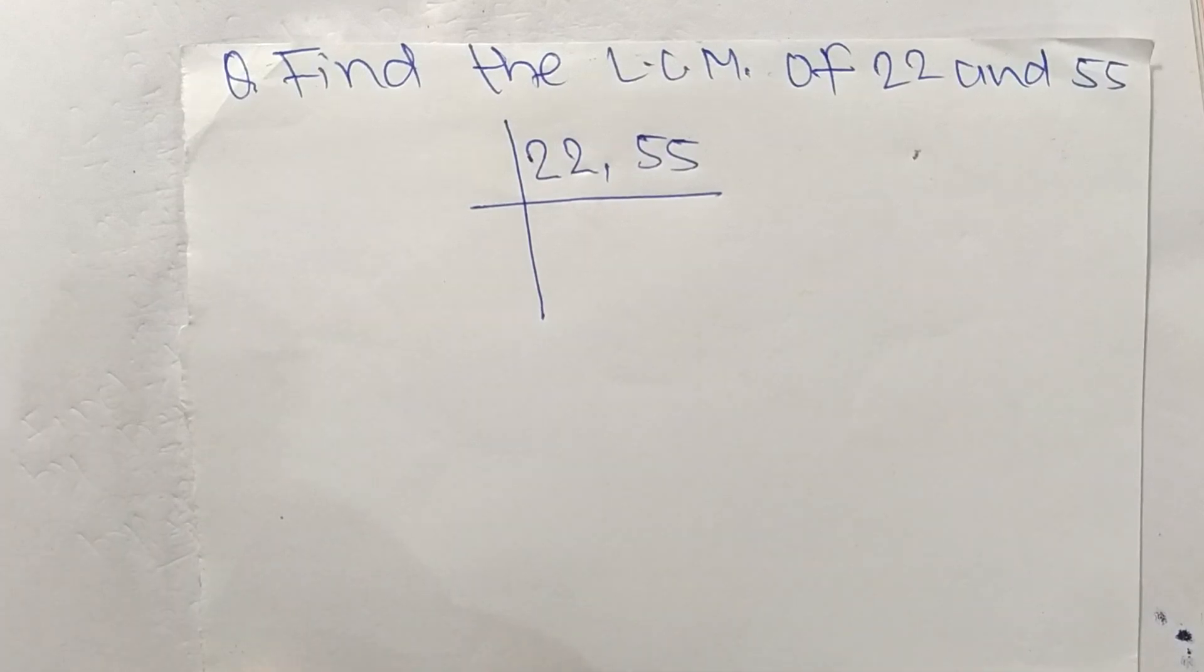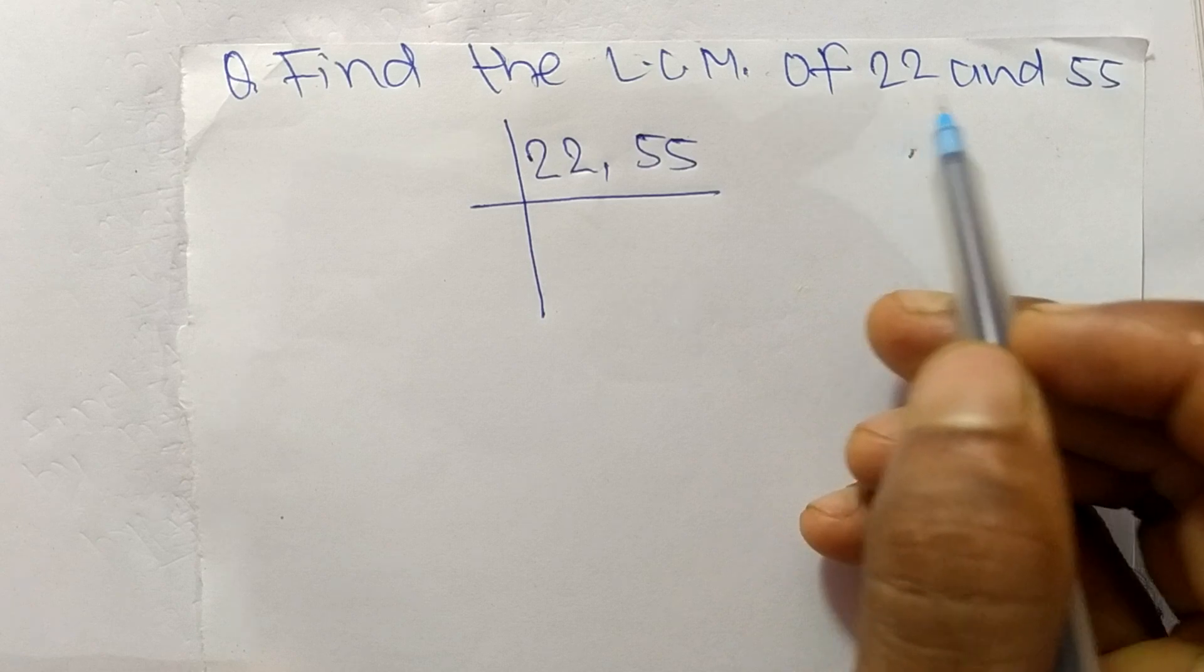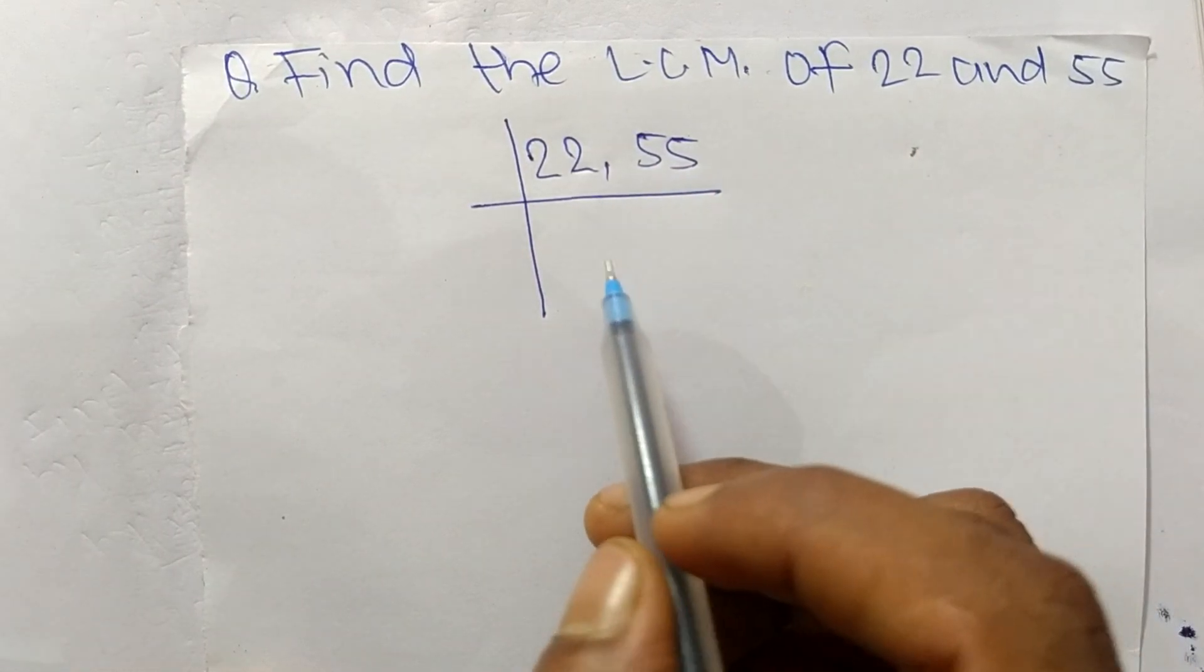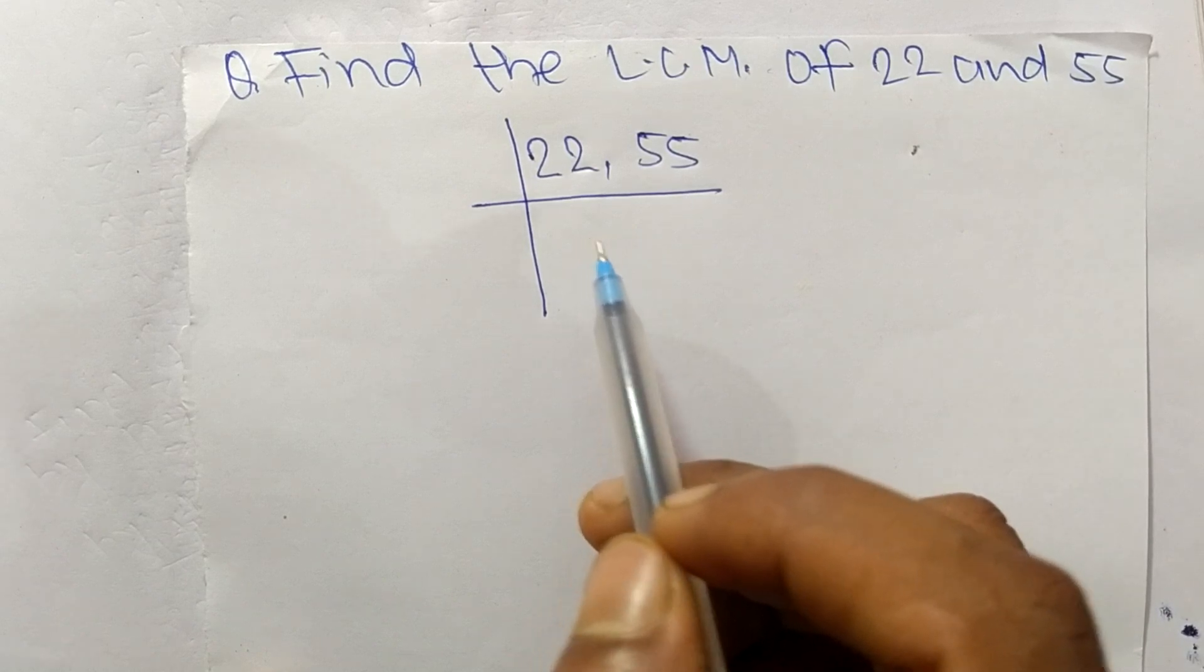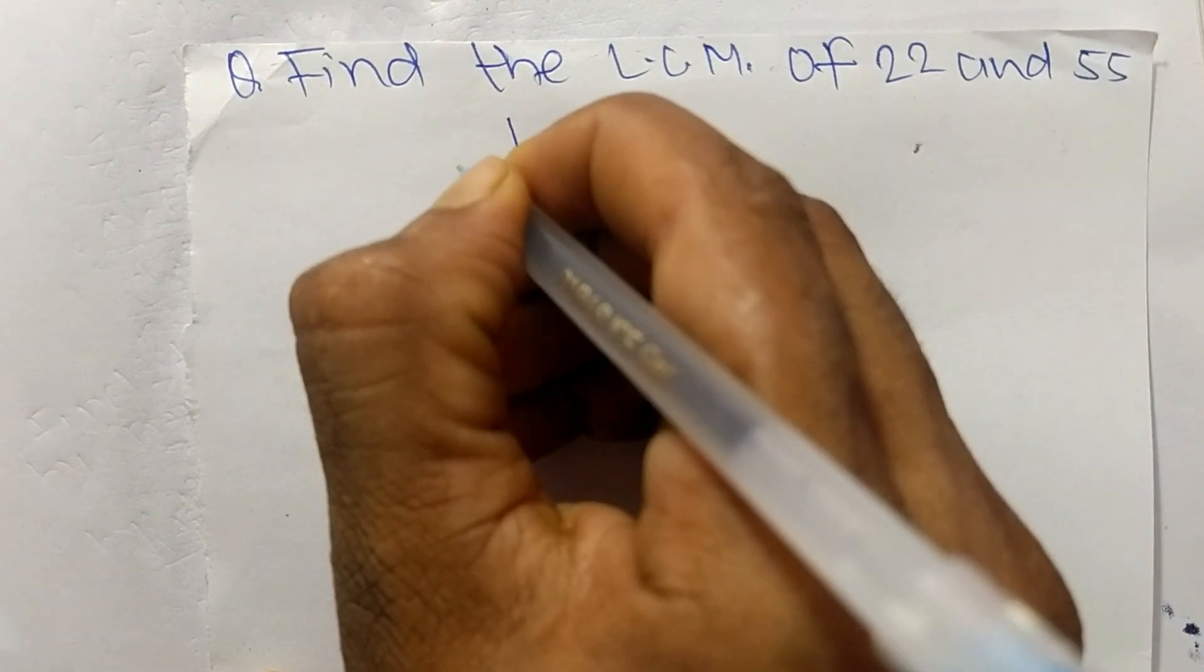Today in this video we shall learn to find the LCM of 22 and 55. To find LCM, first we have to choose the lowest number that can exactly divide 22 and 55. So the number here is